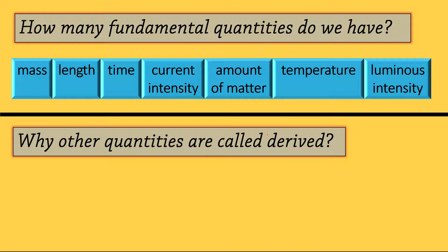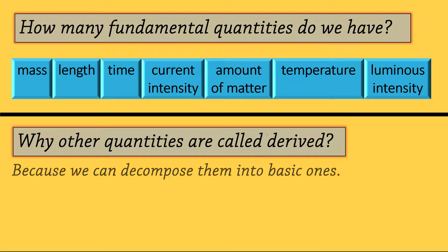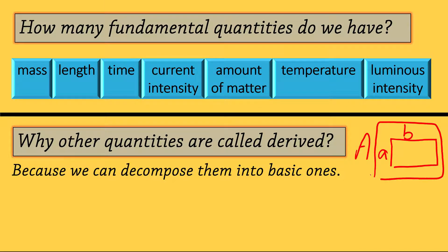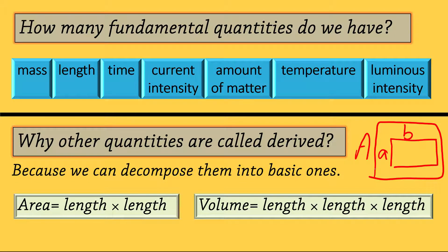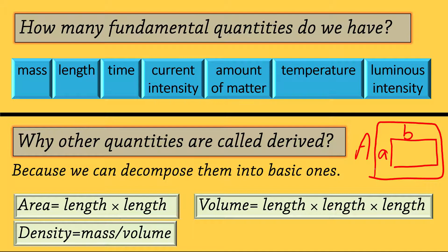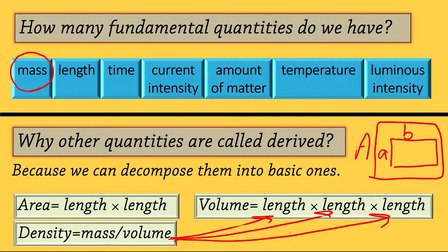Why are other quantities called derived? Because we can decompose them into basic ones. For example, the area of a rectangle is a times b — multiplying a and b gives area, so area is derived, not basic. Similarly, density is the ratio of mass over volume. Mass is a basic quantity, and volume can be expressed in basic quantities, so density equals mass over volume is an equation connecting density as a derived quantity to basic quantities.